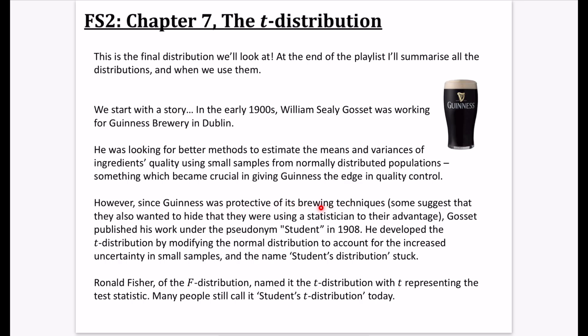But because Guinness was very protective of its brewing techniques, and some also suggest that they wanted to hide the fact that they were even using a statistician to their advantage, Gossett had to publish his work under the pseudonym Student in 1908. Guinness had this rule where they didn't allow anyone who worked for them to publish anything under their name. Some people think it was because they didn't want to show other breweries that they were using maths to make their products even better. He developed the T distribution by modifying the normal distribution to account for the increased uncertainty in small samples. The name student's distribution stuck because people didn't actually know who had invented this.